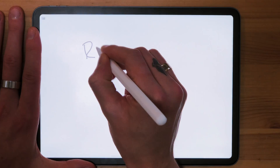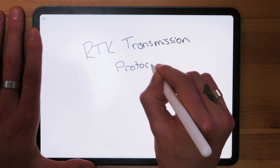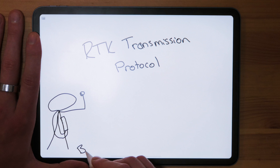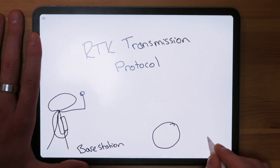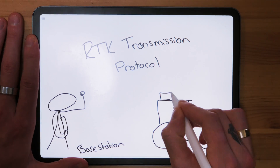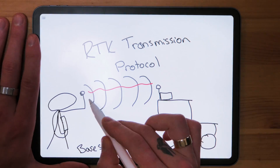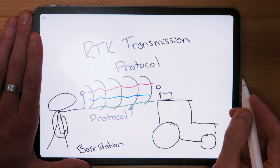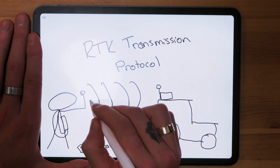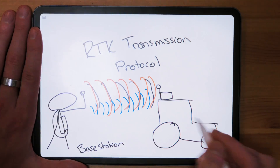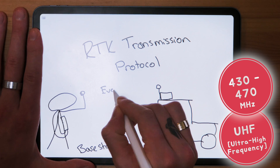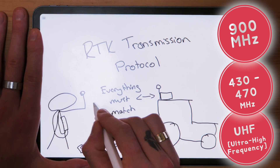Then there's the RTK transmission protocol, which really only applies to radio RTK — with NTRIP we use the standardized internet protocol, so no compatibility concerns there. For radio transmission protocols, we're referring to how the base station and your machines communicate with each other. Different radio manufacturers have different protocols, so ensure your base station radio and machine radios have matching protocols. We also need to match frequencies; the most commonly used range is UHF, or 430 to 470 MHz, while 900 MHz is also used in parts of the world such as the US and Australia.